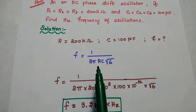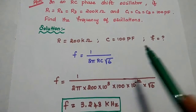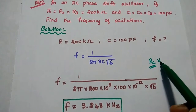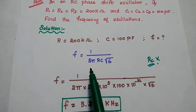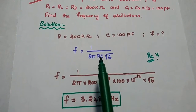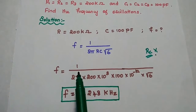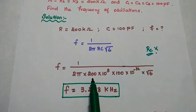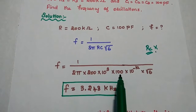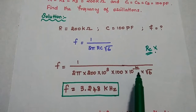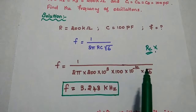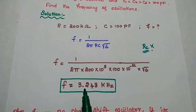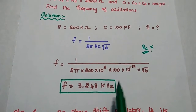Because RC — that is the collector resistance — is not given in the problem, we can use this formula. Substituting the values of R and C: 1 by 2 pi into 200 into 10 to the power 3, C value is 100 into 10 to the power minus 12 (pico means minus 12), into square root of 6, we get the answer as 3.248 kilohertz.